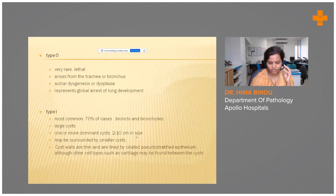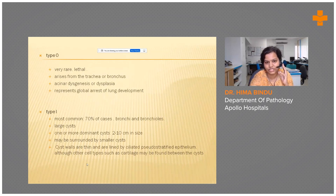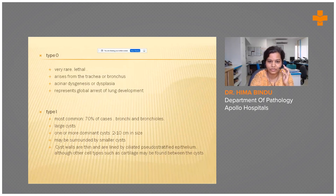The classification is important because it gives us an idea of the prognosis of the lesion. Type 0 is considered lethal and very rare — lethal in utero. It represents global arrest of lung development with acinar dysplasia and dysgenesis.